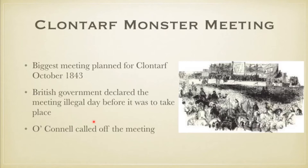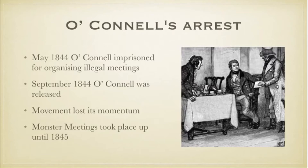O'Connell, being a pacifist, decided to call off the meeting because he didn't want anyone arrested by the English government. The following May, O'Connell was imprisoned for organising the Clontarf meeting, even though the meeting hadn't taken place — he was arrested for the organisation of it. In September 1844 he was released because they couldn't find enough evidence to charge him, given that he had called off the meeting. But the movement and its momentum had been lost.